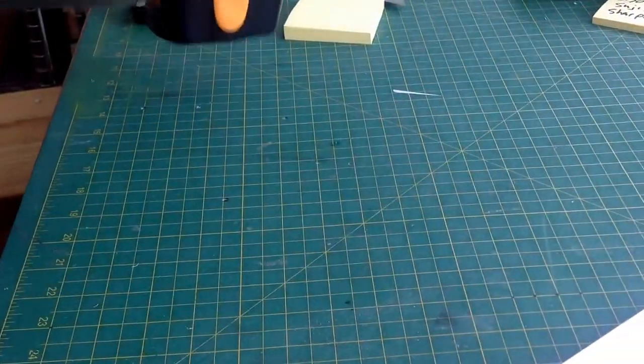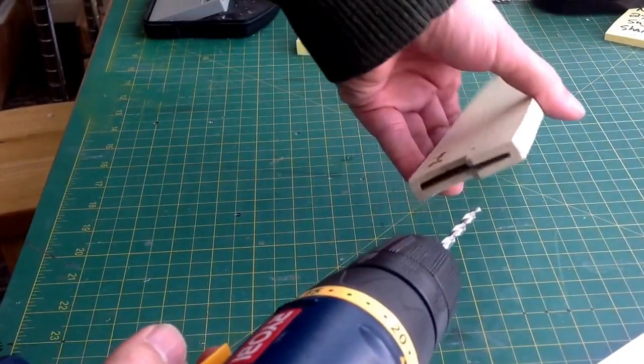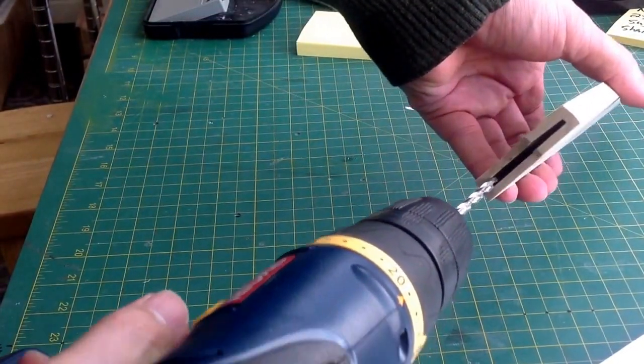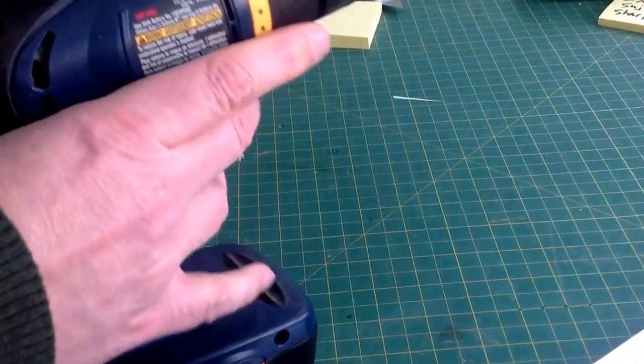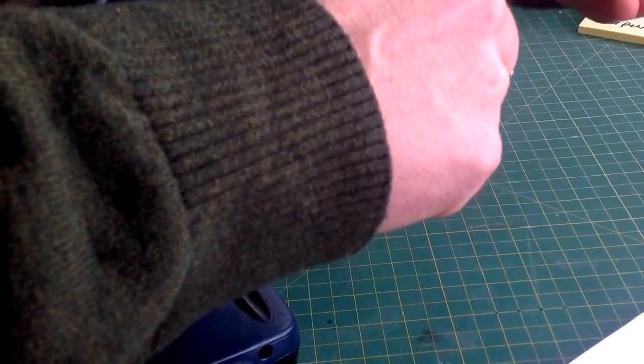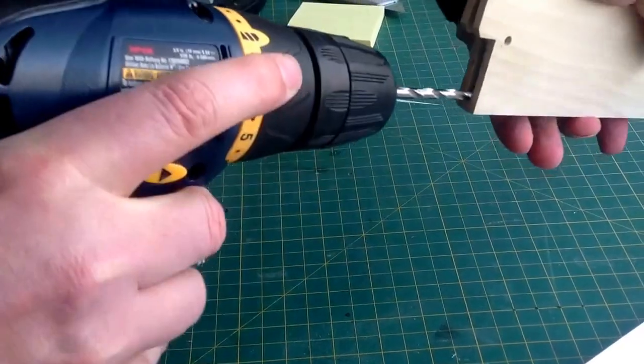So in this case what we'll do often times is we'll just take a drill and we'll select a bit that is pretty close to the size of the slot. And we'll drill this out. And by expanding this just a little bit, often times we can get it to slide in. So pretty easy.